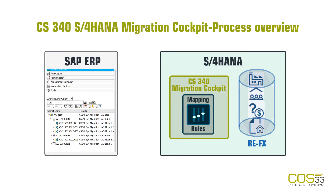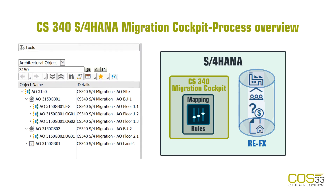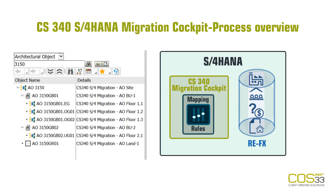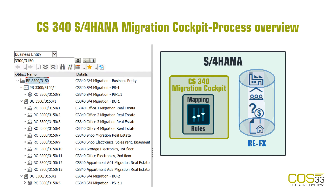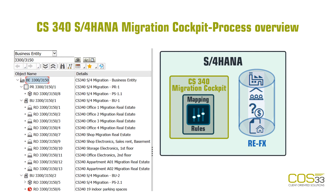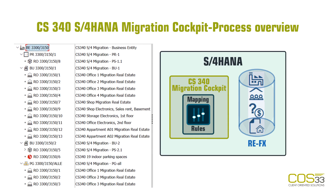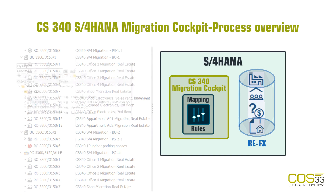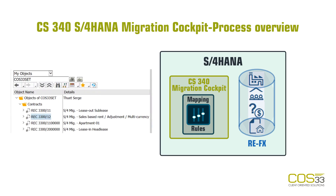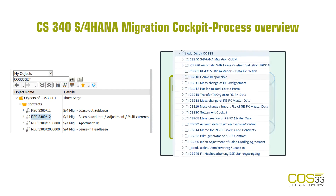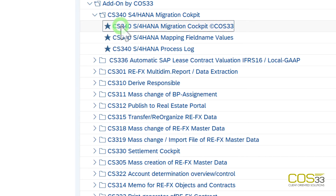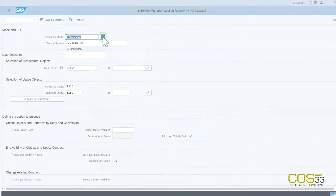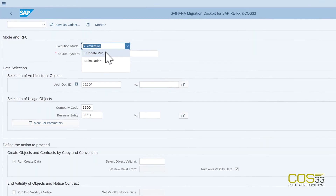In this example, we will migrate all architectural objects of the locality 3150, all objects belonging to the business entity 3150, including the service charge settlement master data and all business entity contracts. To do this, simply run the migration cockpit transaction in your S4HANA. In this video, we will directly proceed with the Update Run.